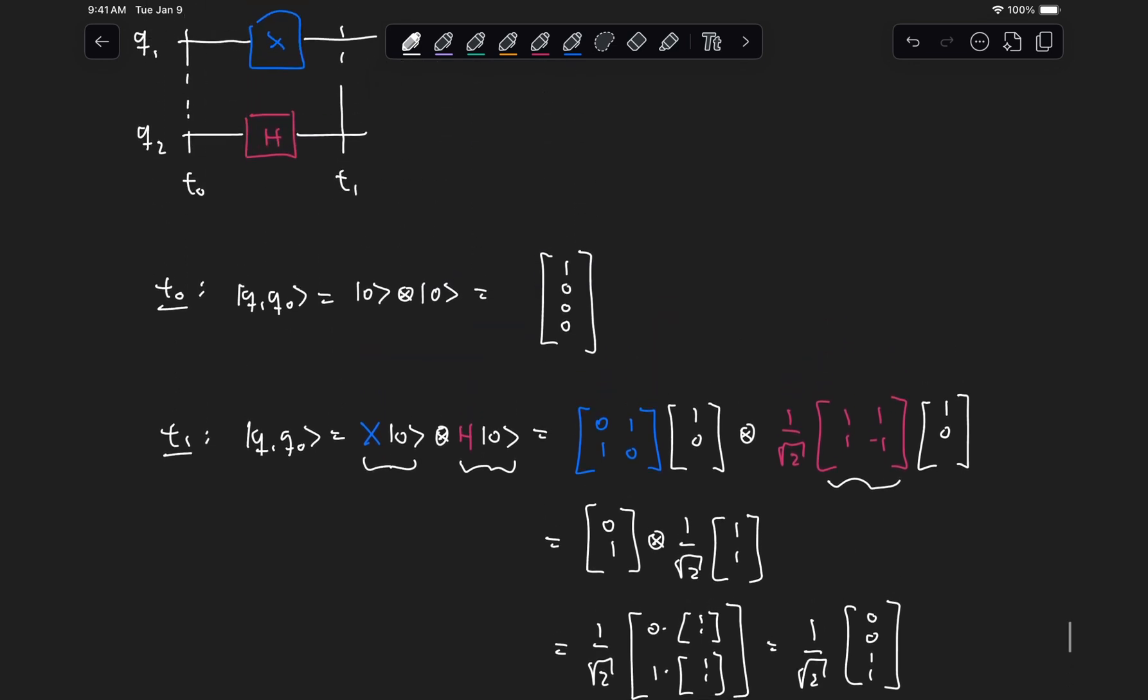So two ways in which we can analyze the circuit is, we can find the total unitary by taking the tensor product of the individual gates acting on the qubits, or we can evolve each individual qubit and then take the tensor product at the output. And if you recall, this is very similar to what we did with probabilistic systems.